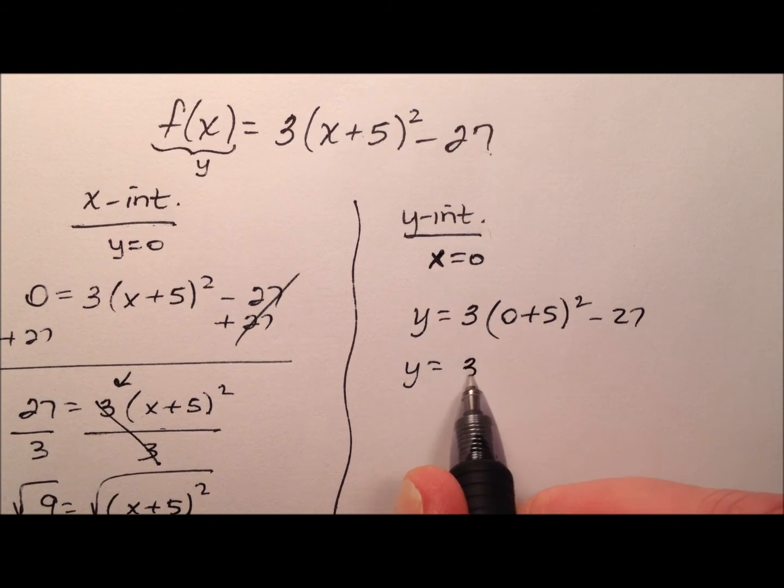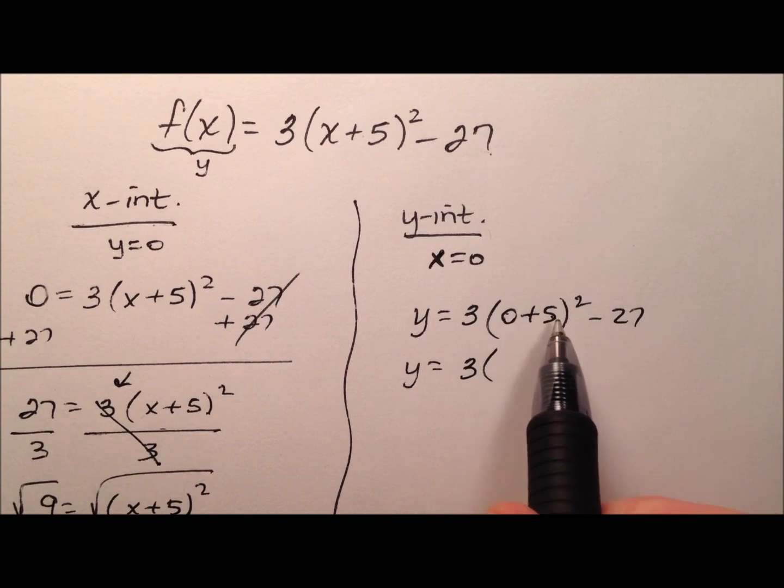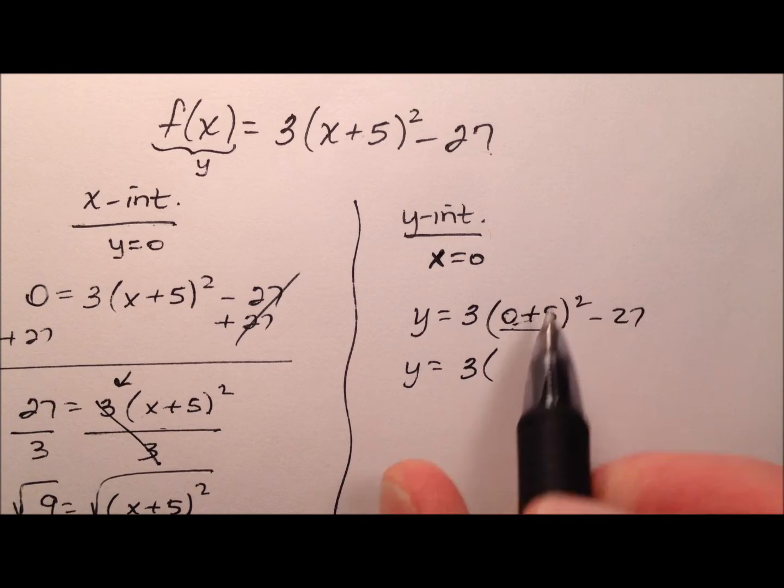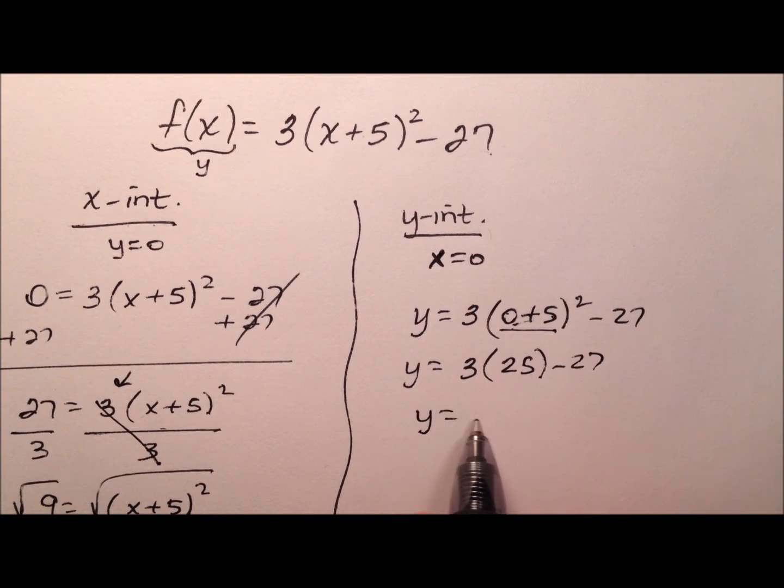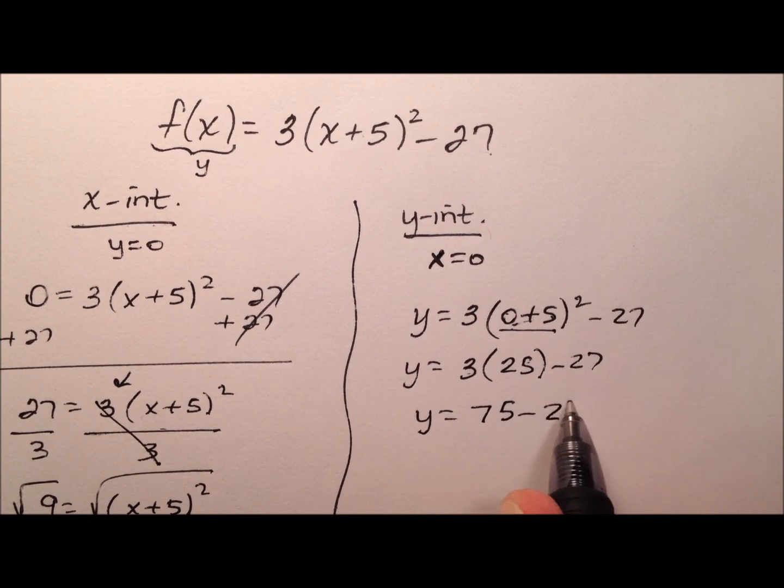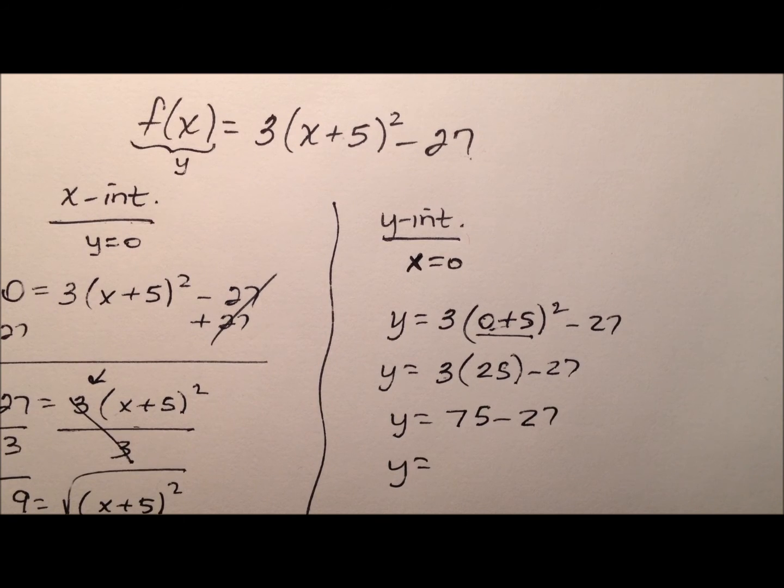So y equals 3 times, well 0 + 5 is 5, 5² is 25. So it looks like we'll have 3 × 25 which is 75 minus 27, and we know that 75 - 27 is going to be 48.